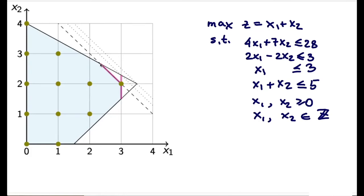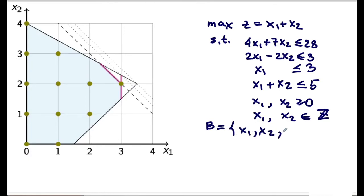If our simplex implementation finds the integer optimal solution we are done. But we assume it finds the other corner, which is fractional for both x1 and x2. We then need to add more Gomory cuts to cut off this IP-infeasible solution. We proceed by identifying the basic variables and expressing them through the non-basic variables — the basic set is x1, x2, s2, s3.